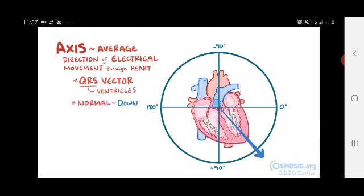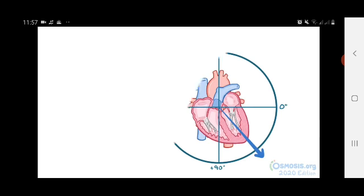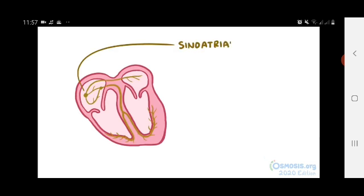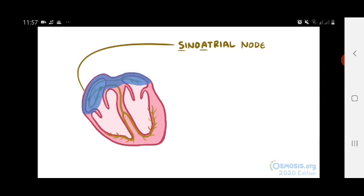Normally, the QRS axis aims downward and to the left in relation to the body. If we simplify this heart a bit, normally the sinoatrial, or SA node, sends an electrical signal that propagates out through the walls of the heart and contracts both upper chambers.